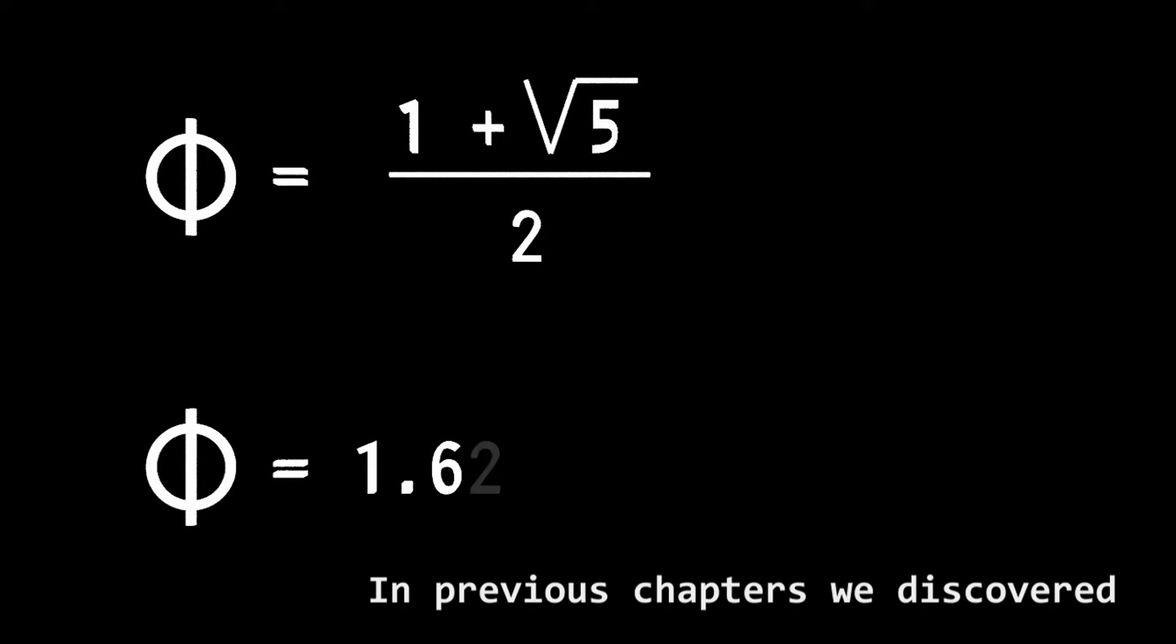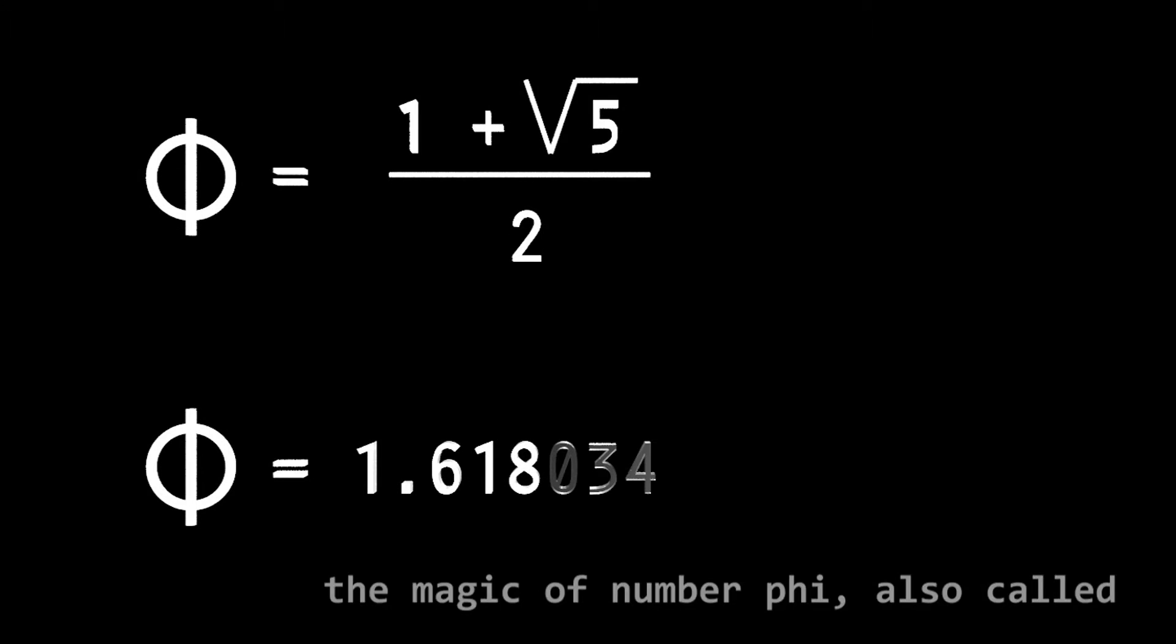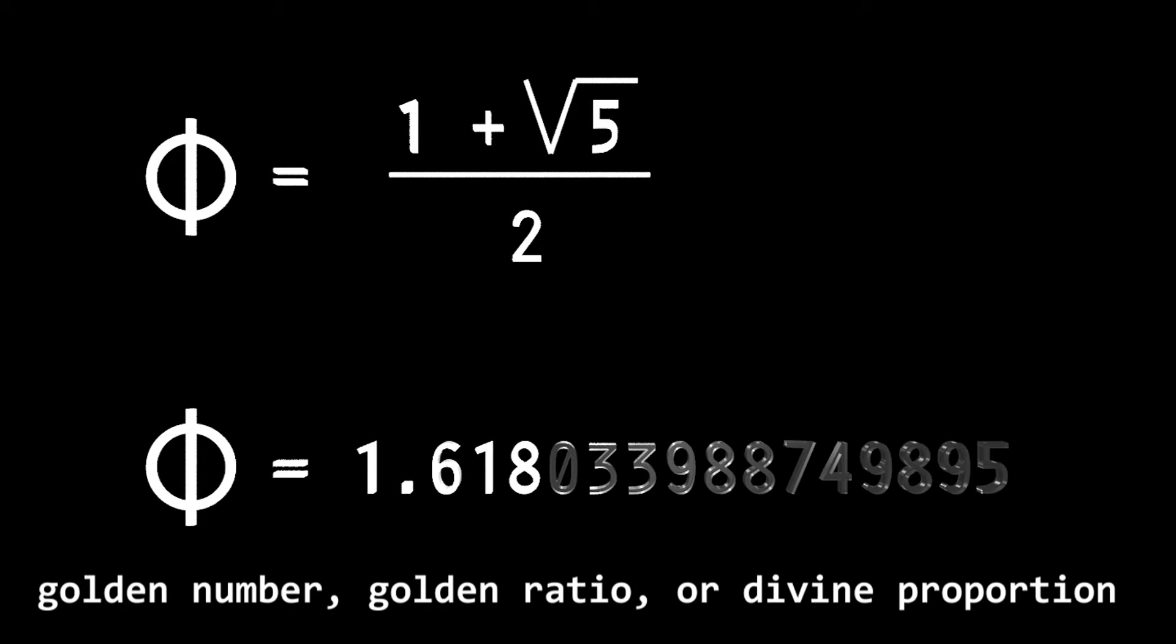In previous chapters, we discovered the magic of number phi, also called Golden Number, Golden Ratio, or Divine Proportion.